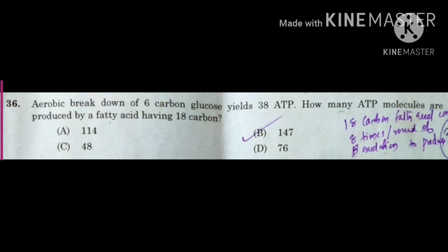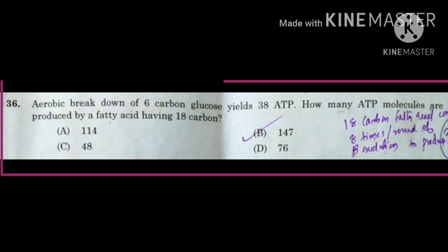The question is: aerobic breakdown of 6-carbon glucose yields 38 ATP. How many ATP molecules are produced by a fatty acid having 18 carbons? The options are A. 114, B. 147, C. 48, and D. 76.